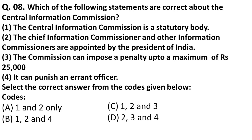The next question is about the Central Information Commission. Statement one — CIC is a statutory body — is correct. Statement two — the Chief Information Commissioner and other Information Commissioners are appointed by the President of India — is also correct. Statement three — the commission can impose a penalty up to a maximum of Rs. 25,000 — is correct. However, the ability to punish an errant officer is not within their jurisdiction, so the correct answer is statements one, two, and three only.